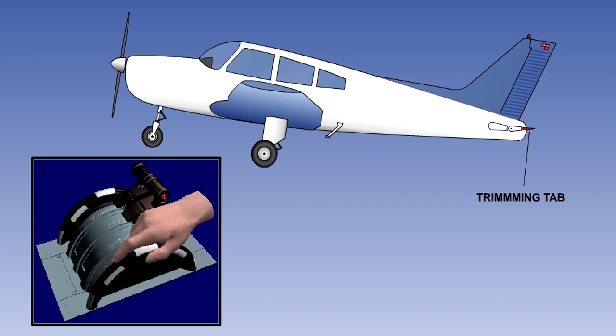The trimming tab is a small adjustable surface set into the trailing edge of a main control surface. Its deflection is controlled by a trim wheel or switch in the cockpit, usually arranged to operate in an instinctive sense.